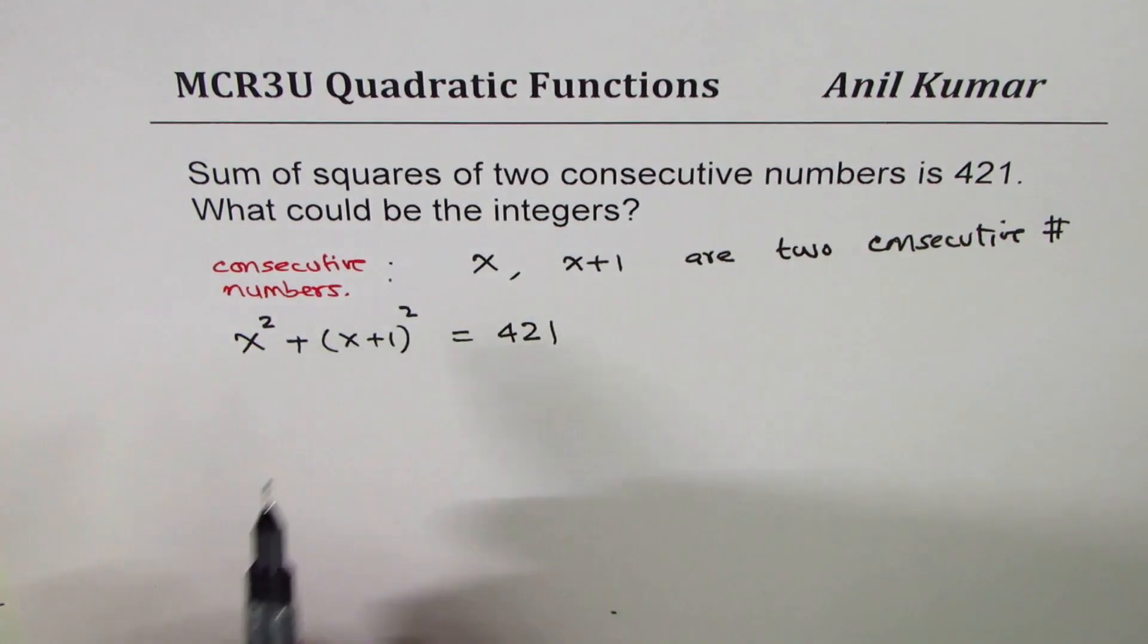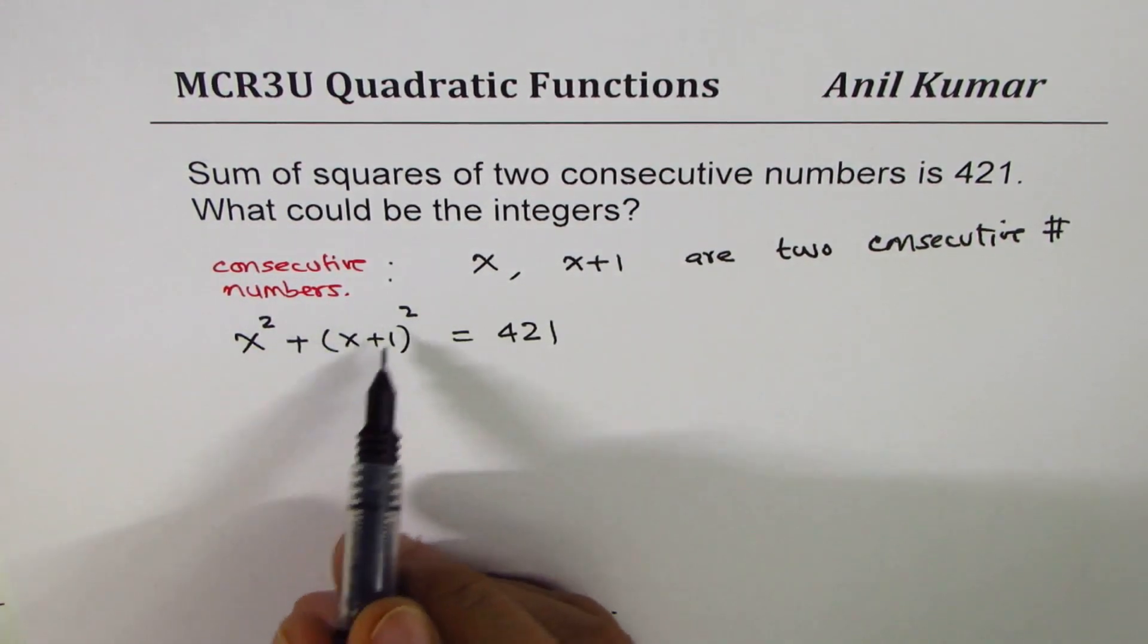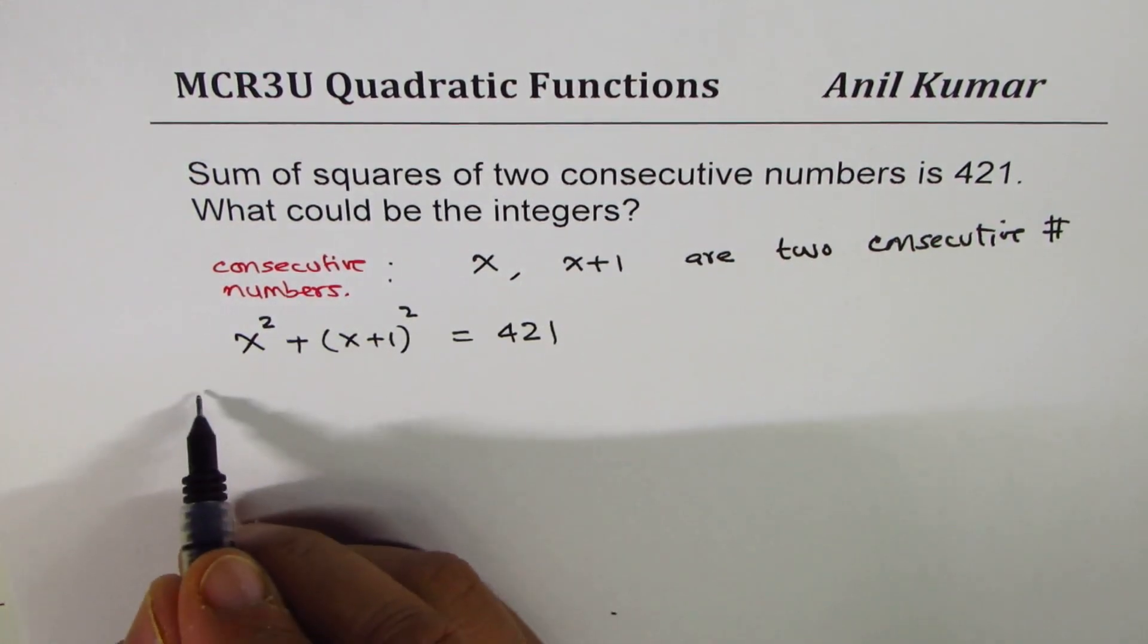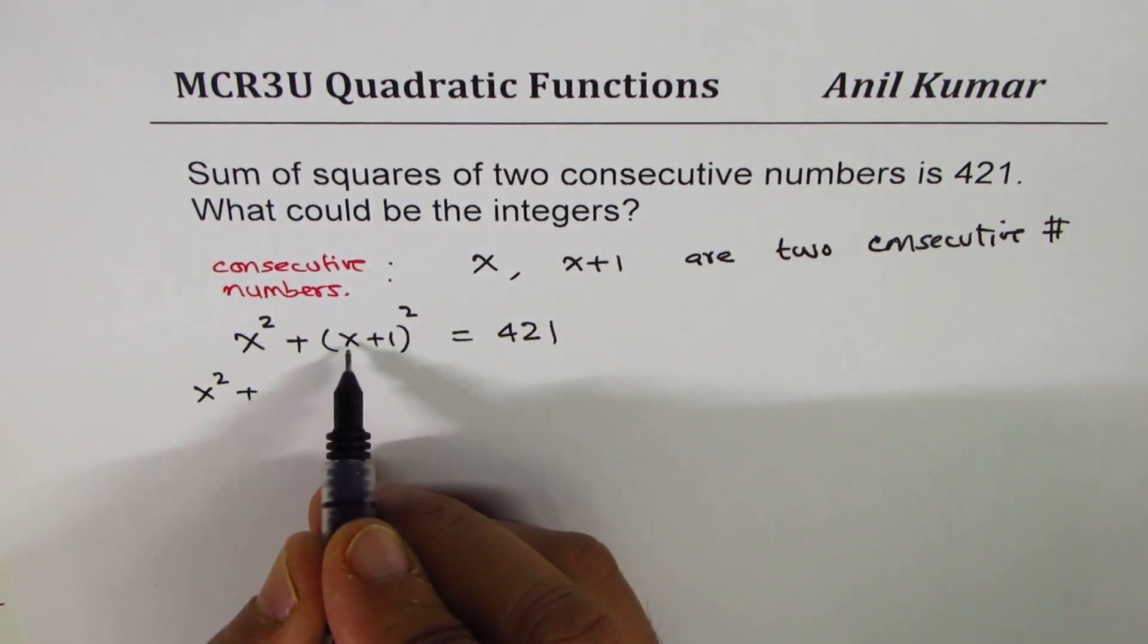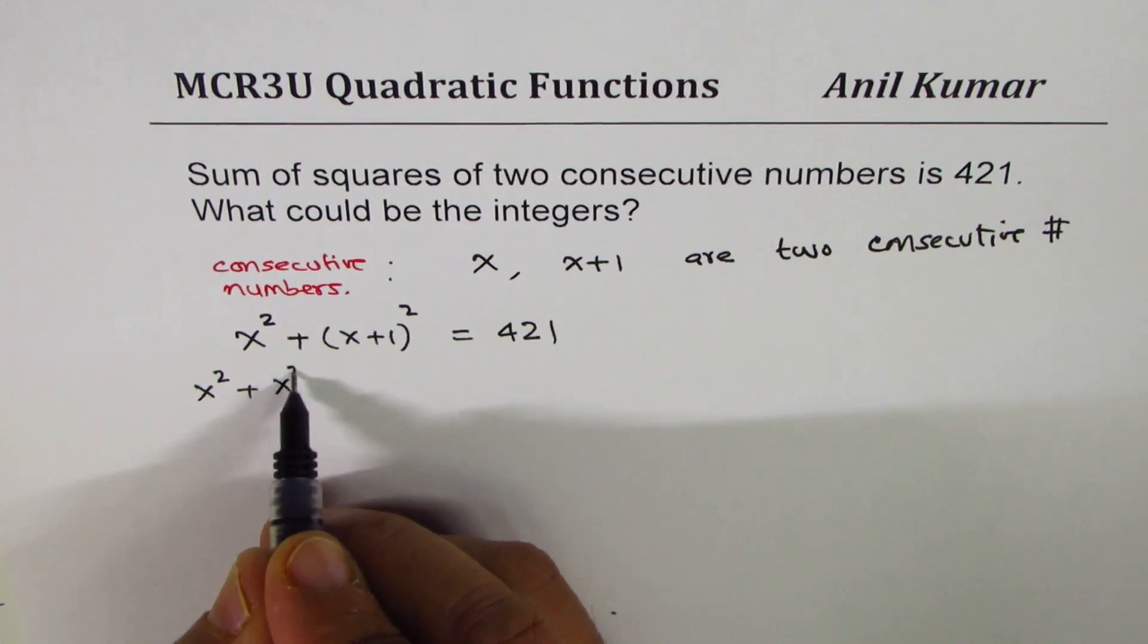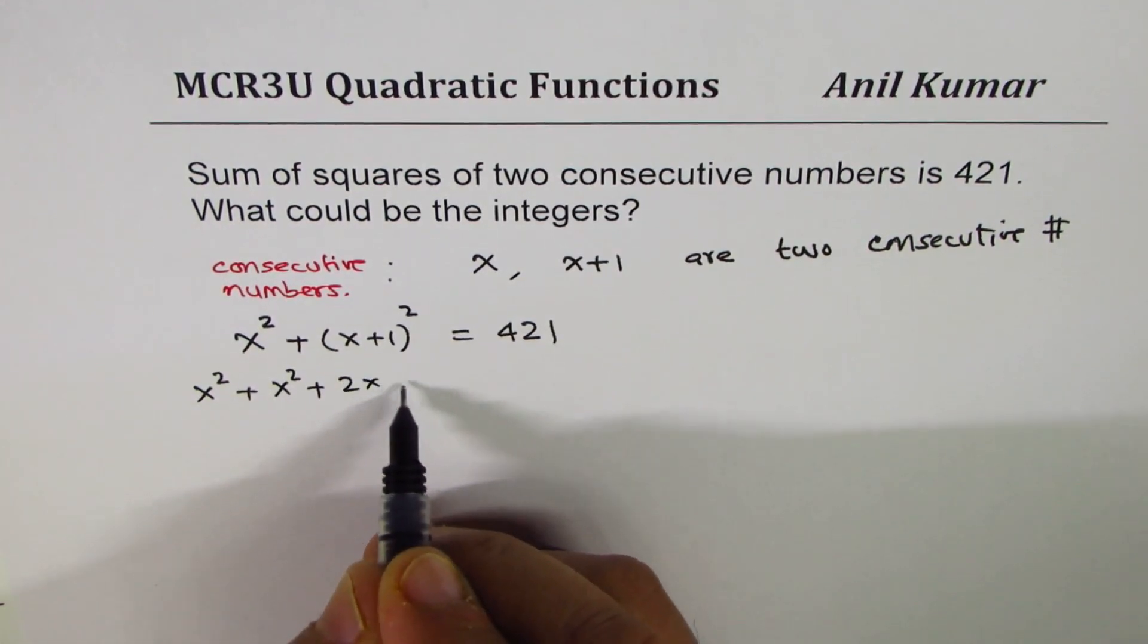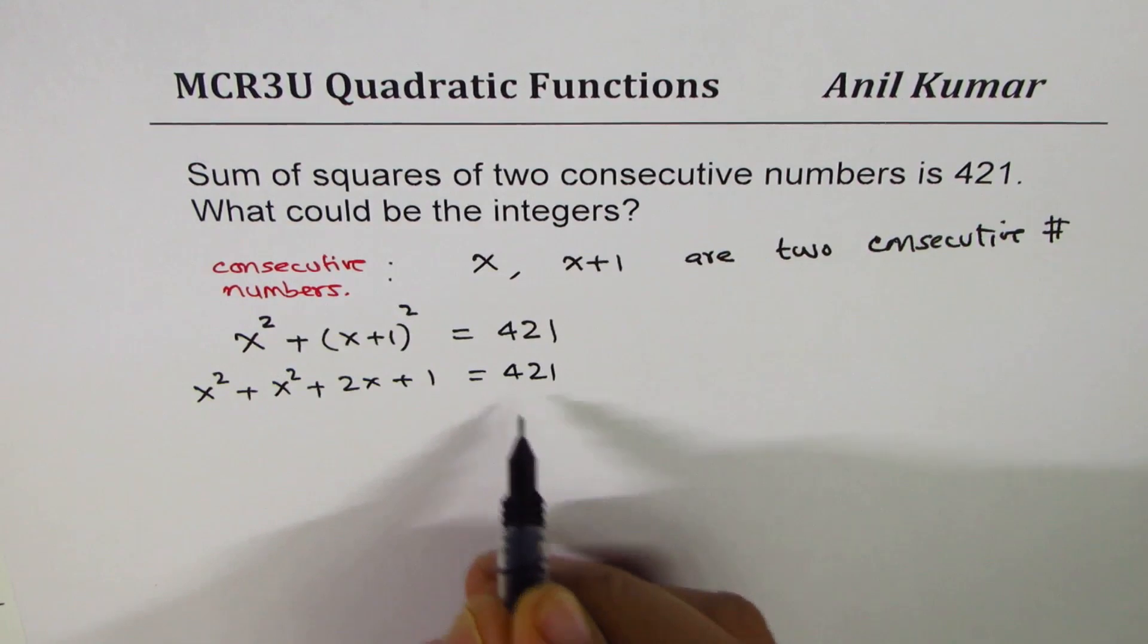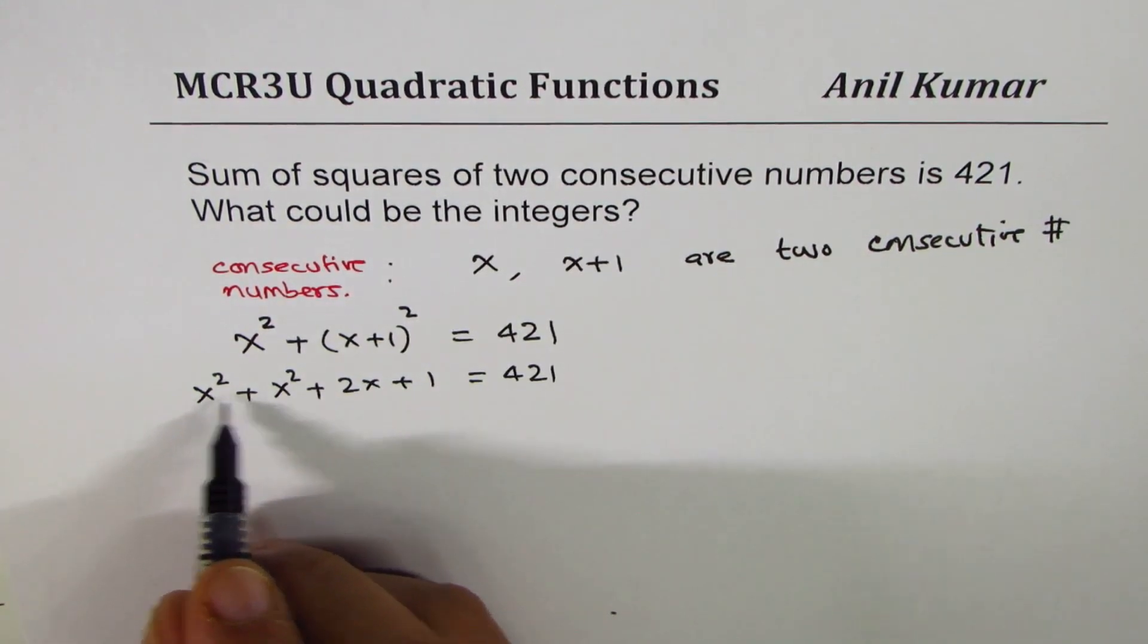Okay, so let's open the brackets. We get x² plus (x+1)² is x² plus 2x plus 1, this is equal to 421. Bring all the terms together, combine the like terms.